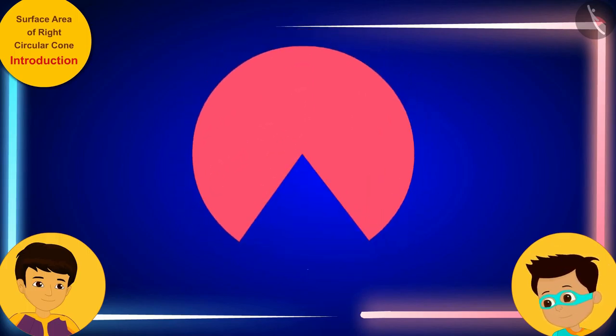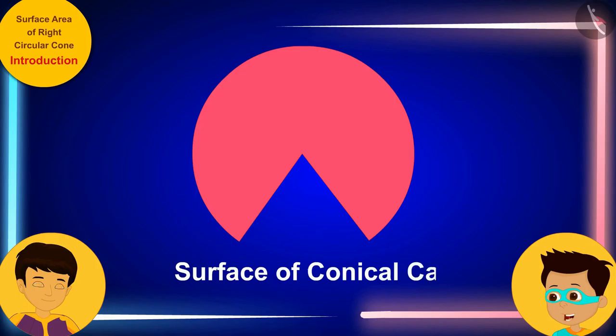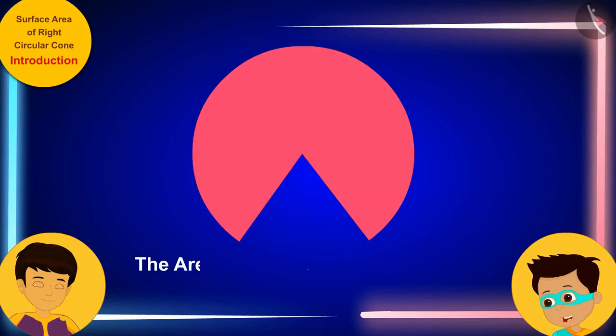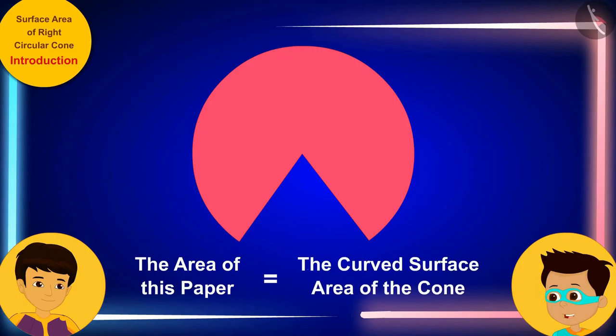we will find that the paper of this shape makes the surface of your conical cap. In other words, the size or the area of this paper will be equal to the curved surface area of the cone.